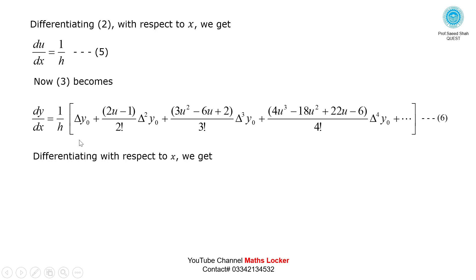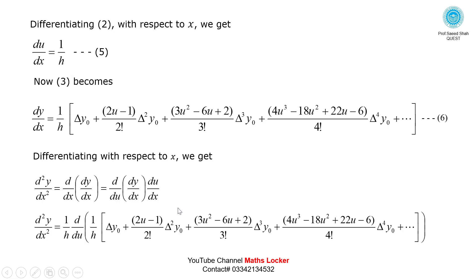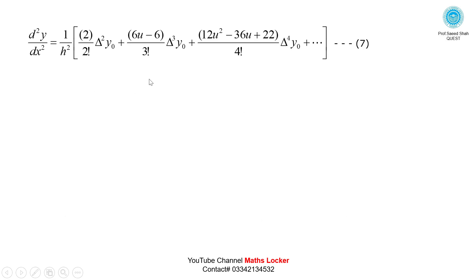To obtain the second derivative, we differentiate again using the chain rule: d²y/dx² = d/dx(dy/dx). We write d/dx as (d/du)(du/dx), substitute dy/dx and multiply by 1/h, then take the derivative with respect to u again. This yields the second derivative — equation number 7.